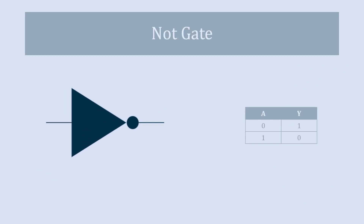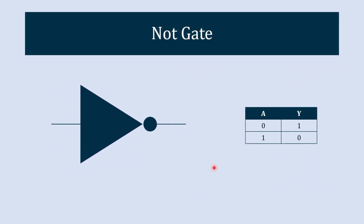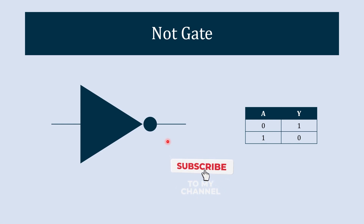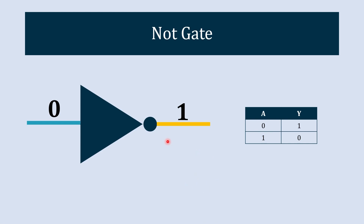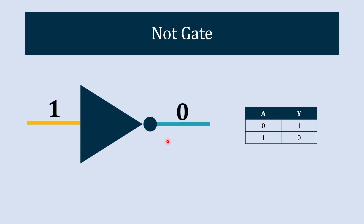First we will start with the NOT gate. This NOT gate is also known as the inverter gate — it just inverts whatever input you give. For example, if we give 0 as input, it will give 1 in output. And if we give 1 as input, it will give us 0 in output. So it is ultimately inverting the input, and that is why it is known as the inverter gate or NOT gate.